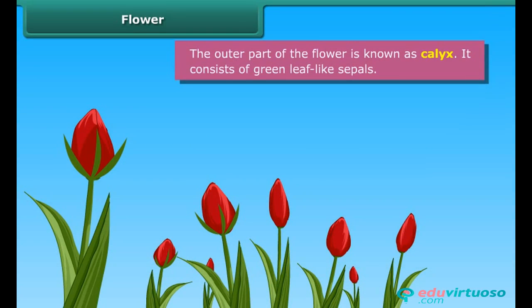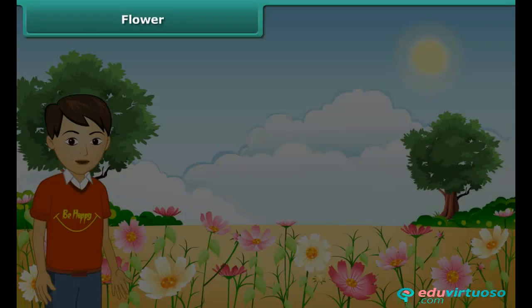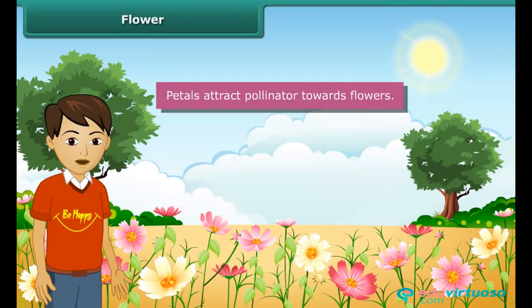The outer part of the flower is known as the calyx. It consists of green leaf-like sepals. The inner part of the flower is called the corolla, and it comprises the petals. Different flowers have petals of different colors. Petals attract pollinators to the flower.